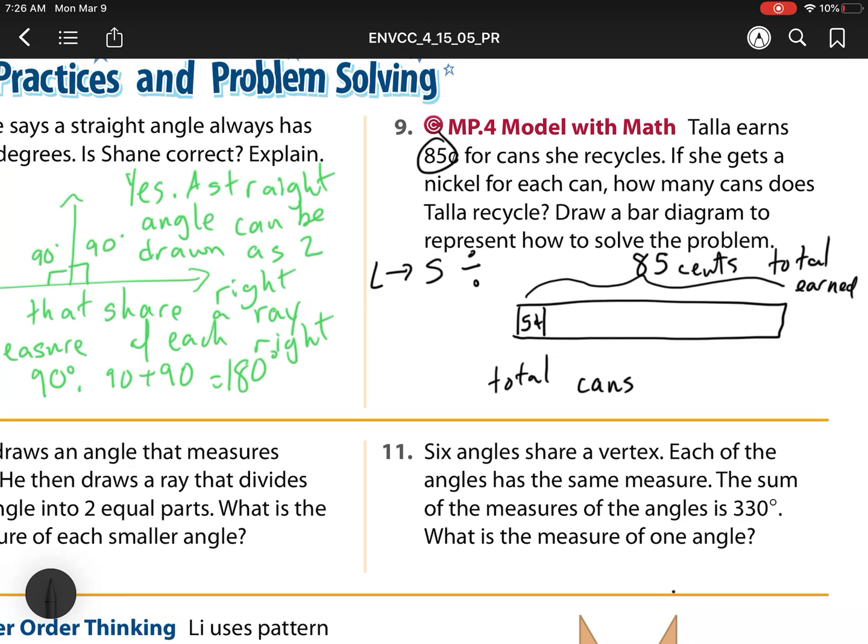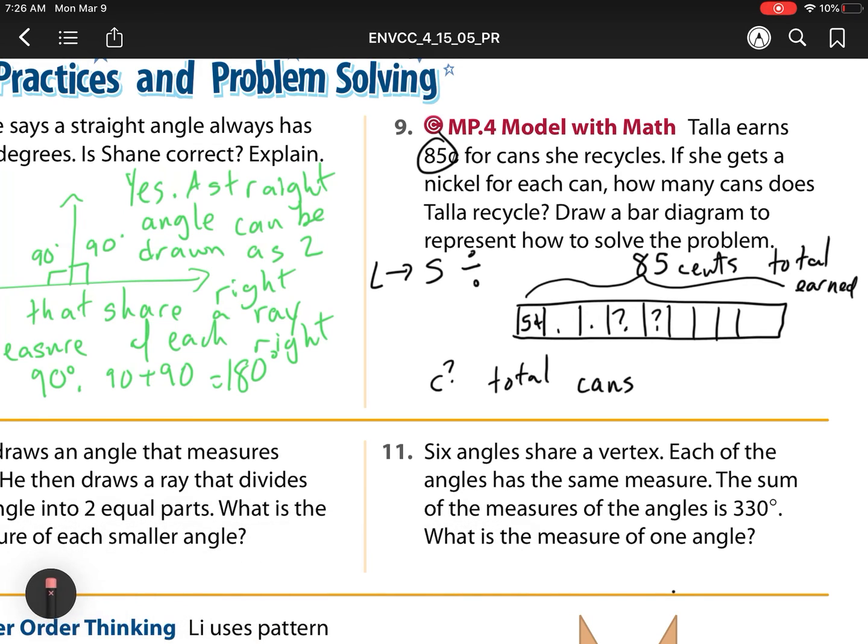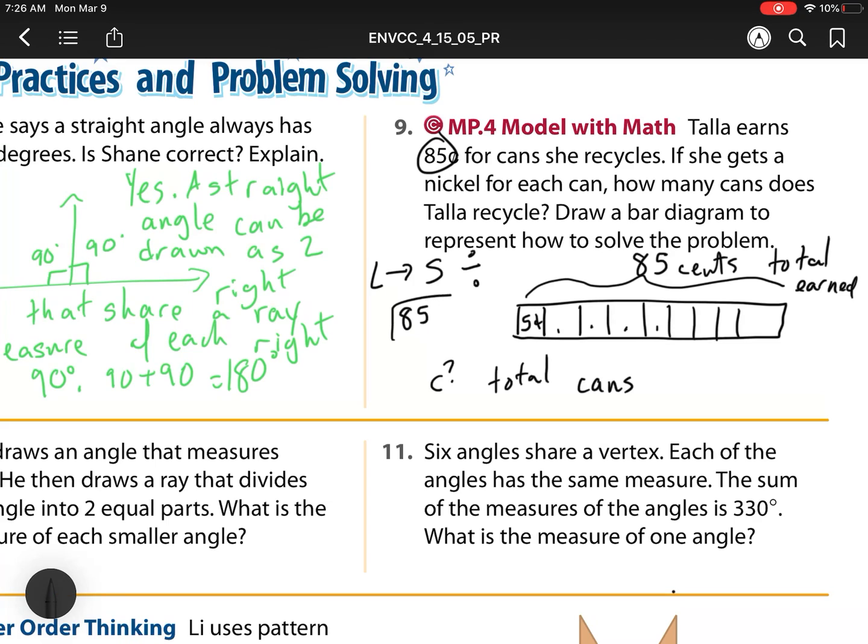And what is it that I'm looking for? I'm looking for 5 cents. And I'm looking for my total cans. So I'm looking for this mystery C. What does this C equal? How many cans did I get? I need to break it up into these equal parts. But I don't know how many equal parts I'm breaking it up into. So let's now do our division. We have 85 divided by 5. 5 goes into 8 one time. Multiply, subtract. 5 goes into 35 seven times. Multiply, subtract, check. So my answer is 17. She collected 17 cans.